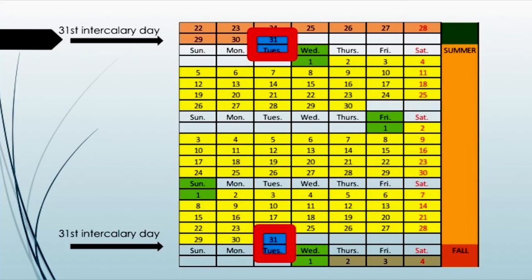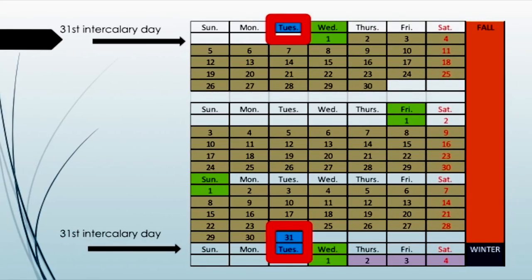We see the months of fall, with our intercalary day at the beginning. The first day of fall, the first day of the seventh month, falls on Wednesday. The eighth month is on Friday. The ninth month is on Sunday. Without the intercalary day, our season of winter would shift. We can't allow that. So we have a 31st intercalary day to make sure that the seasons all begin on the fourth day of the week, when time began.